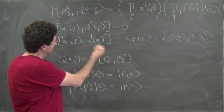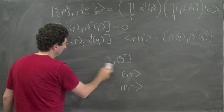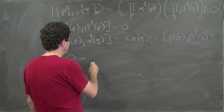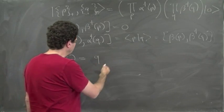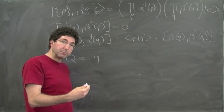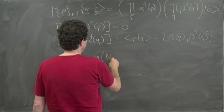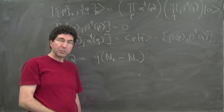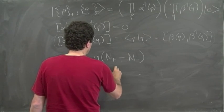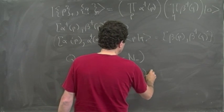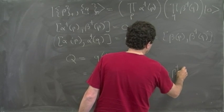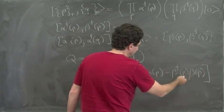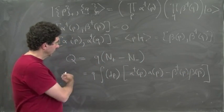We can build any operator out of these creation and annihilation operators. In particular, we can build the charge operator Q. It comes in units of q and counts the number of plus particles minus the number of minus particles: Q = q(N+ - N-). In our notation, this is q times the integral of α†(p)α(p) minus β†(p)β(p).